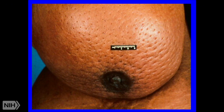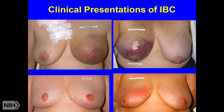Here's an example showing the peau d'orange appearance. In this African-American female the erythema is less appreciable but the peau d'orange skin change is visible. You can also see how this may be missed as a breast cancer — other presentations can look like an infection or a rash. When a patient presents to their primary care physician it can go undiagnosed for some time, and in some cases inflammatory changes can evolve from a pre-existing breast cancer.